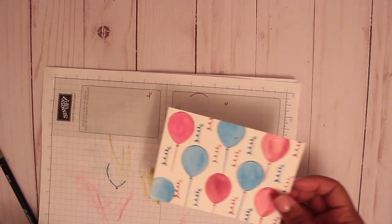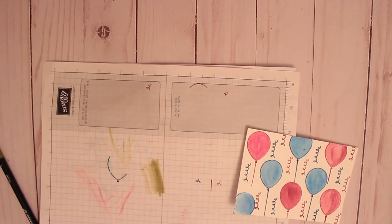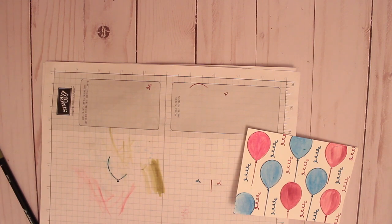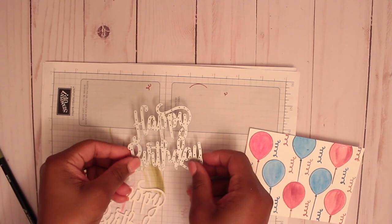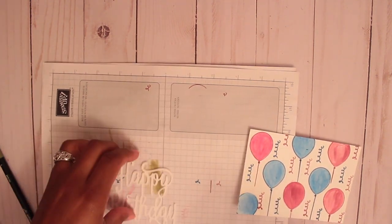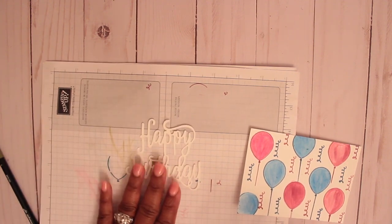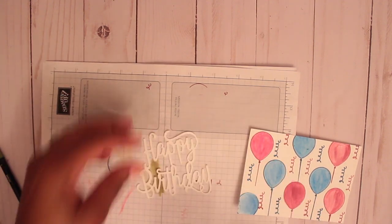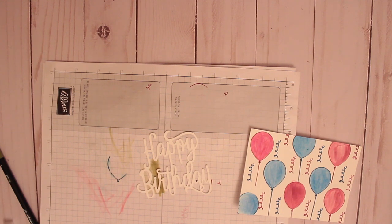Moving on now to the card. I have also the Framelit dies in Happy Birthday. I went ahead and used Whisper White and ran that through the Big Shot and cut that out. And what I'm going to do is sponge this using Night of Navy.